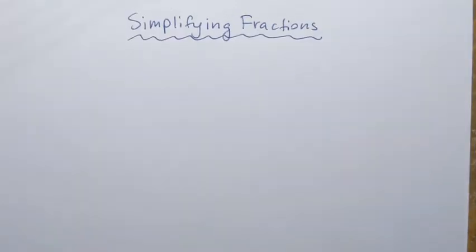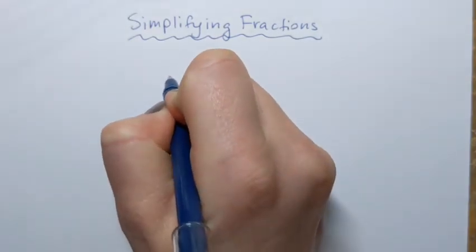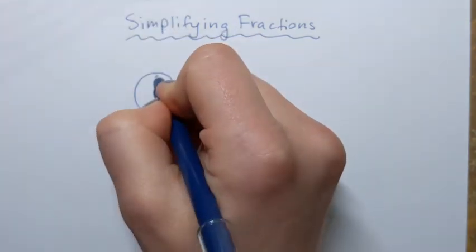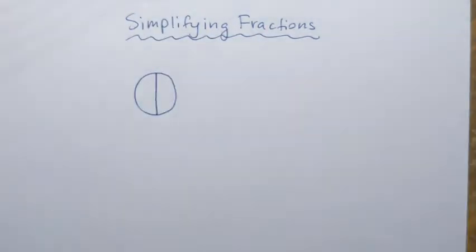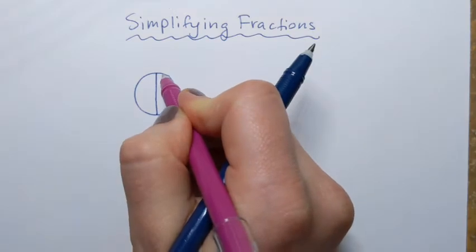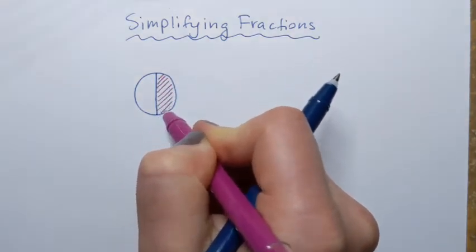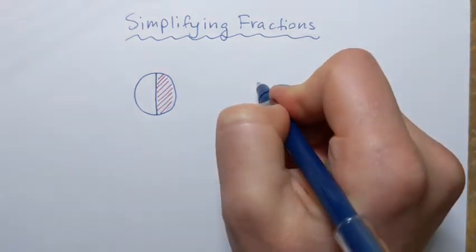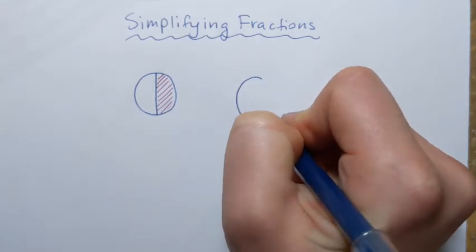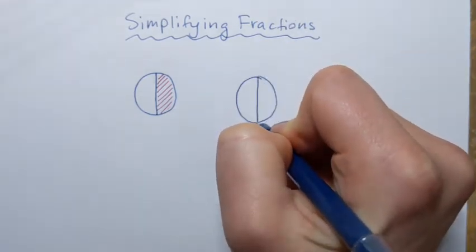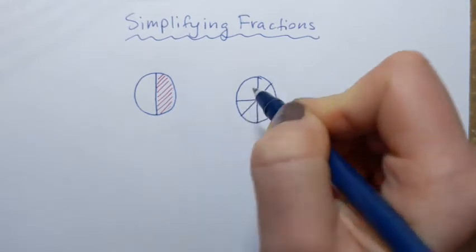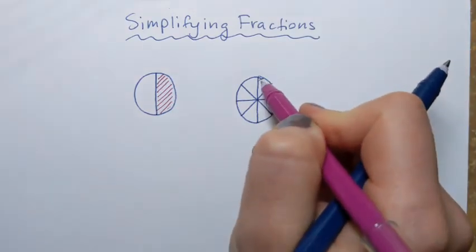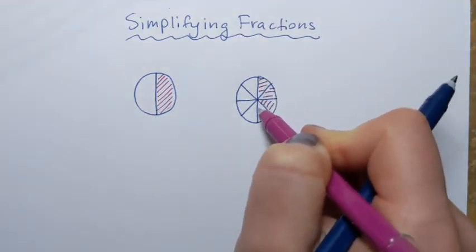Next, we're going to talk about simplifying a fraction. Let's say I have a pizza that I slice one way and highlight one portion, and another pizza of the same size that I slice a different way and highlight four slices.